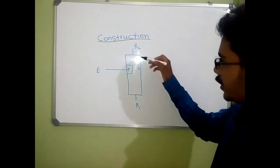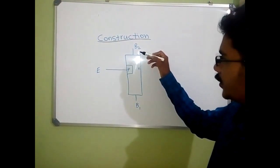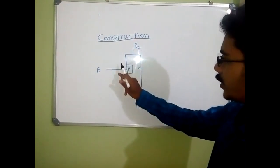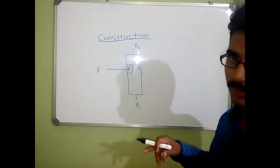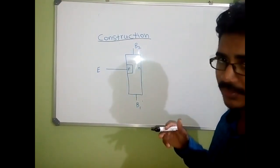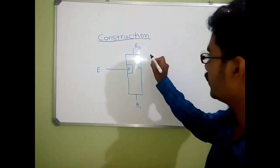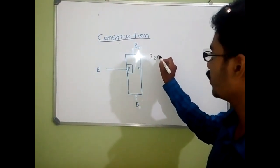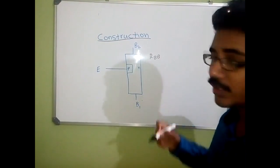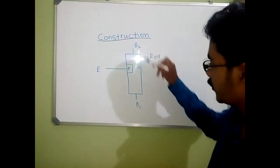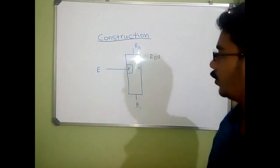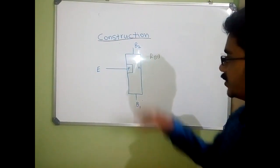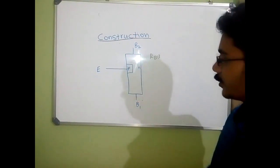The resistance between B2 and B1 when the emitter is open is called inter-base resistance, otherwise called RBD. That is, the resistance between B2 and B1 when the emitter is open. This is how the construction of UJT looks.